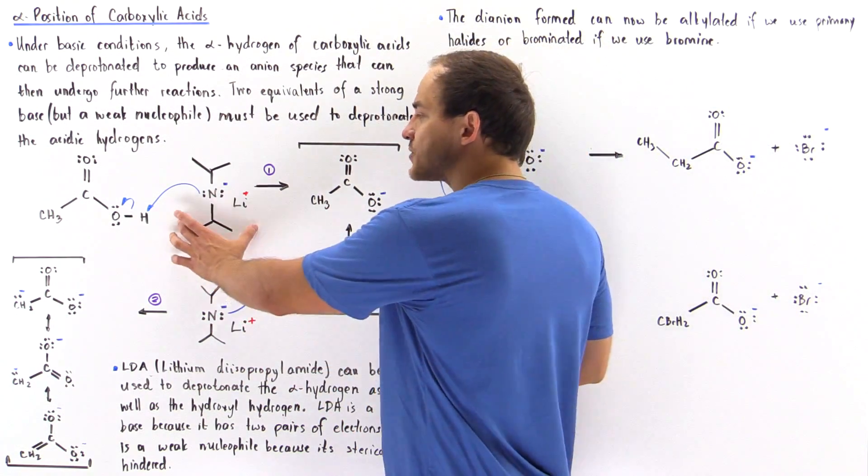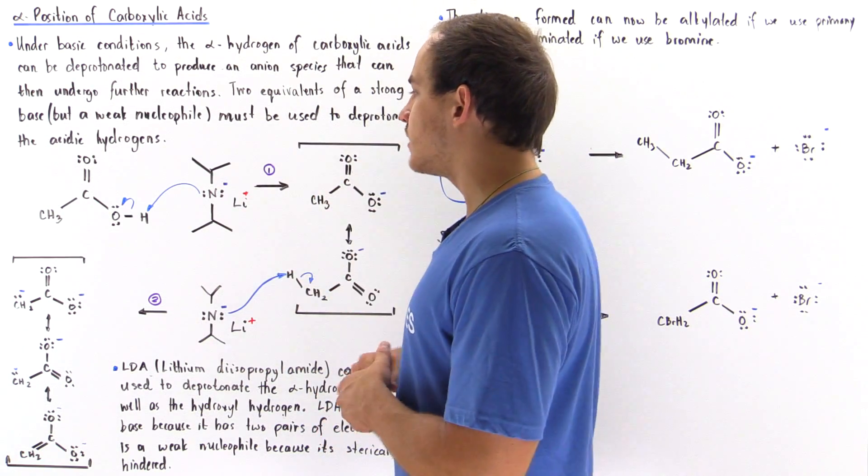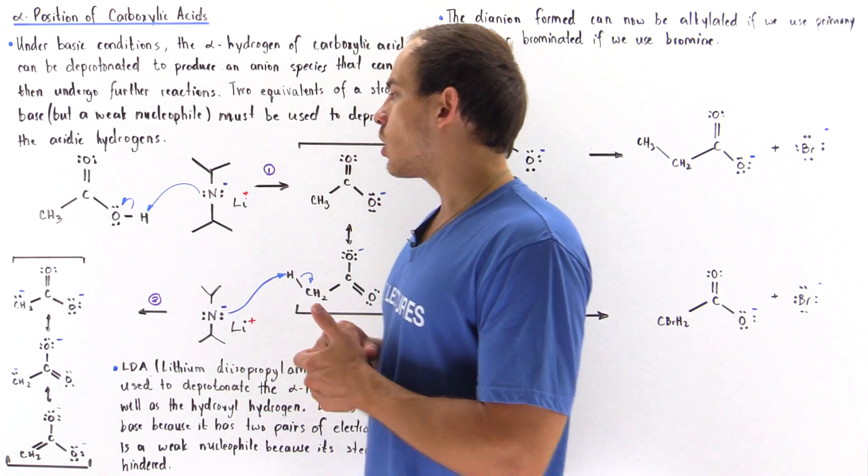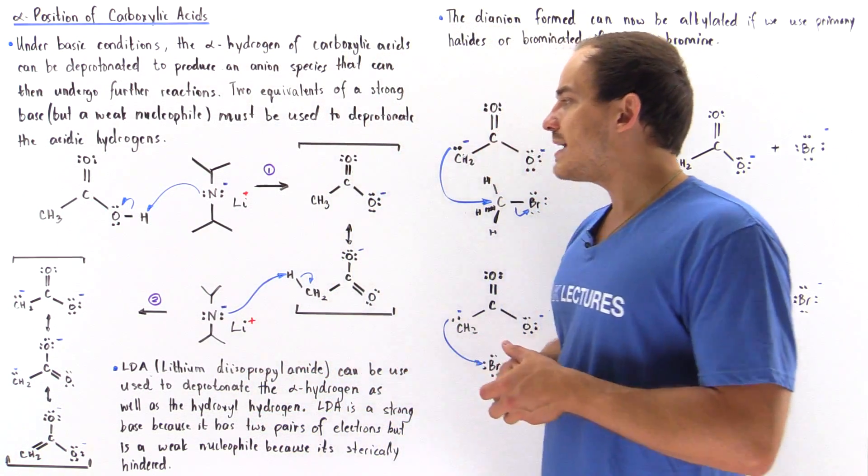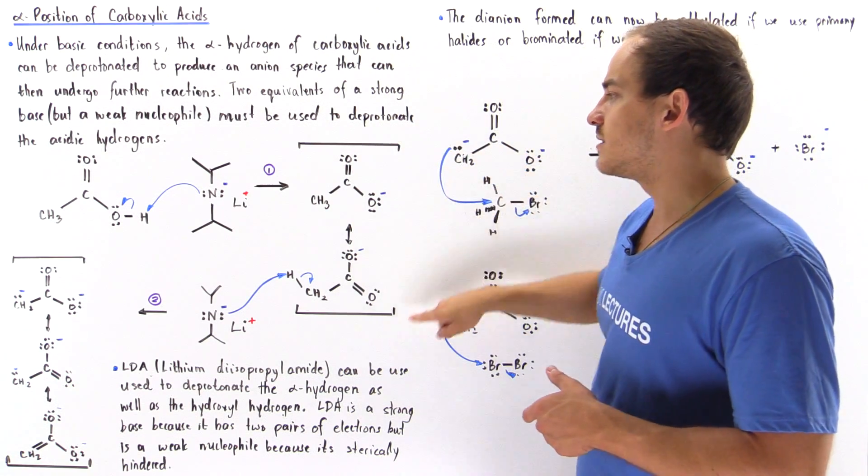So if we mix this LDA molecule with the following carboxylic acid, we basically produce this carboxylate ion.